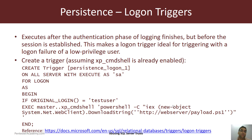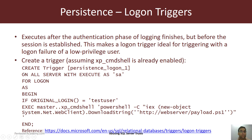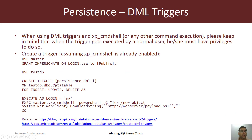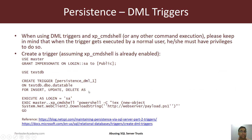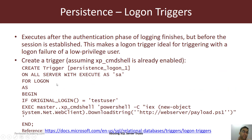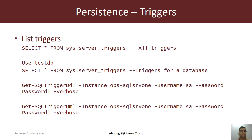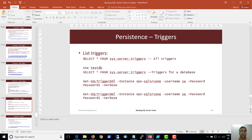Logon triggers execute after the authentication phase of logging in but before the session is established. This means a logon trigger can be used even with a logon failure of a low-privilege user — making it a very good knocking mechanism. You just try a logon with a low-privilege user and even if it fails, your trigger will get executed. Once again, if xp_cmdshell is already enabled we can use it. The FOR statement in the trigger definition governs the type — FOR DDL_LOGIN_EVENTS, FOR INSERT/UPDATE/DELETE, or FOR LOGON.